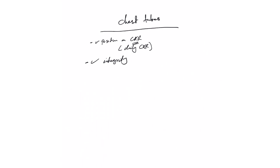The third thing we need to check is the output — whether blood or fluid. We need to know how much the patient has put out in the last 24 hours, because that's one of the criteria we use to decide if the patient still needs the chest tube. We're looking at the daily output, not the total. The nurse will tell you and you'll see marks on the chest tube unit showing exactly how much output there has been on a daily basis.